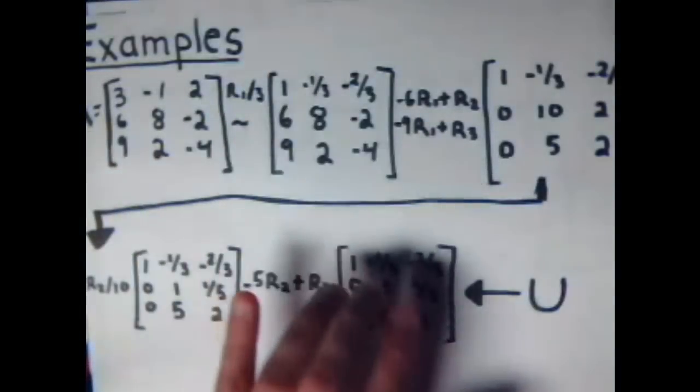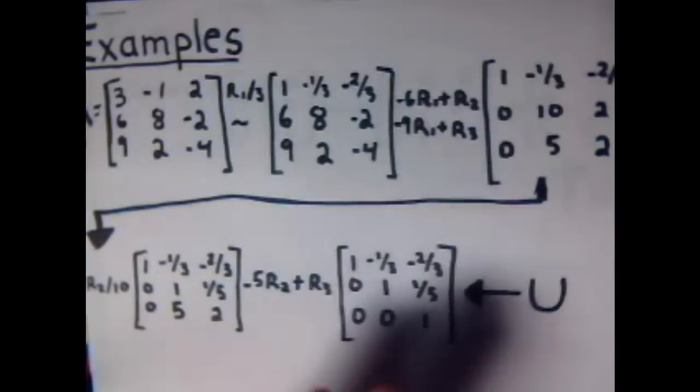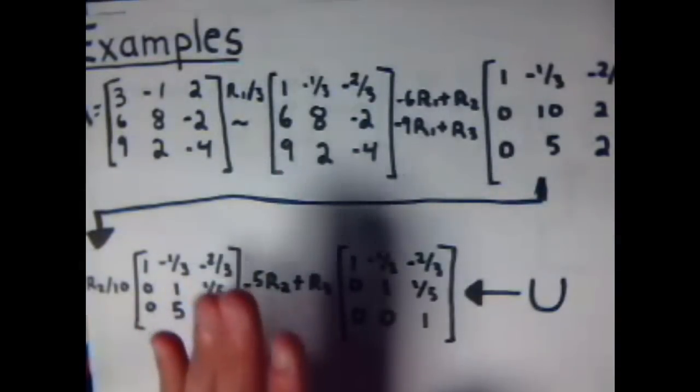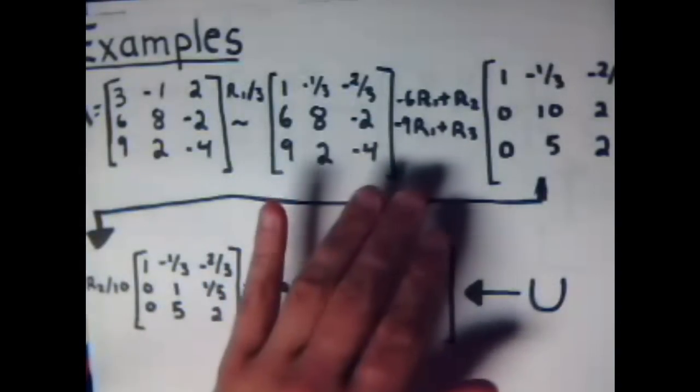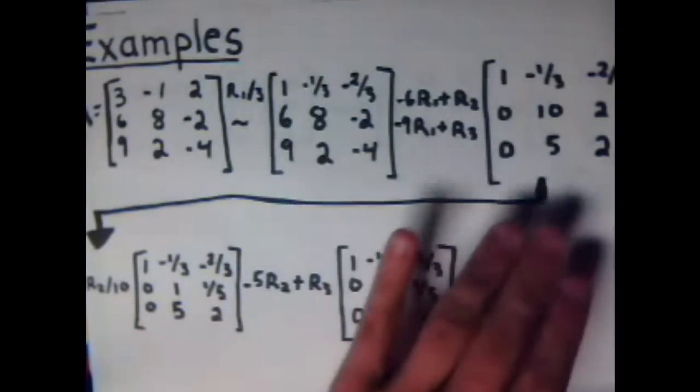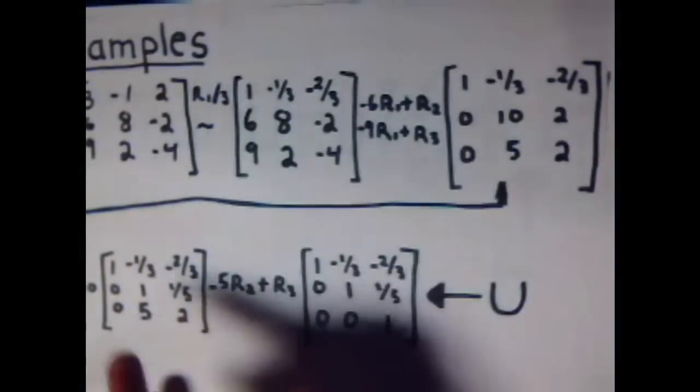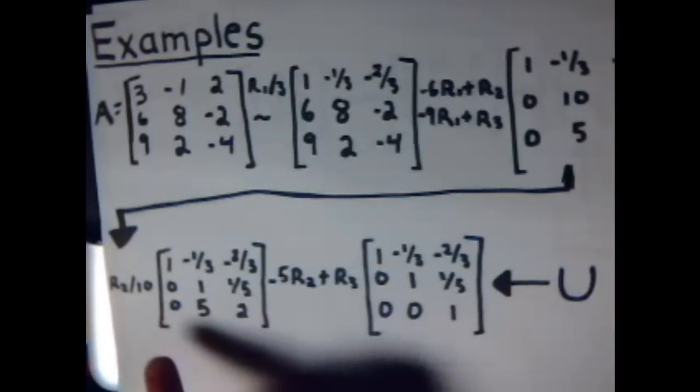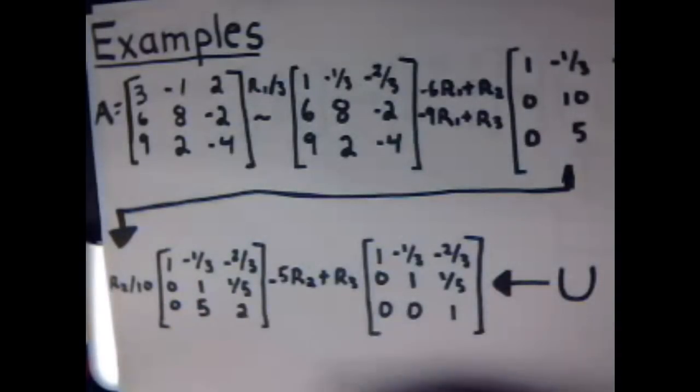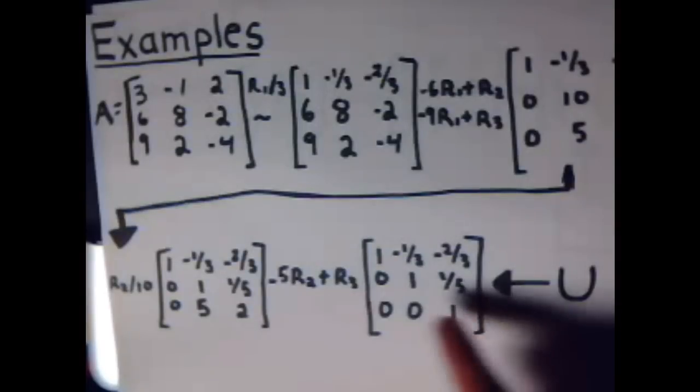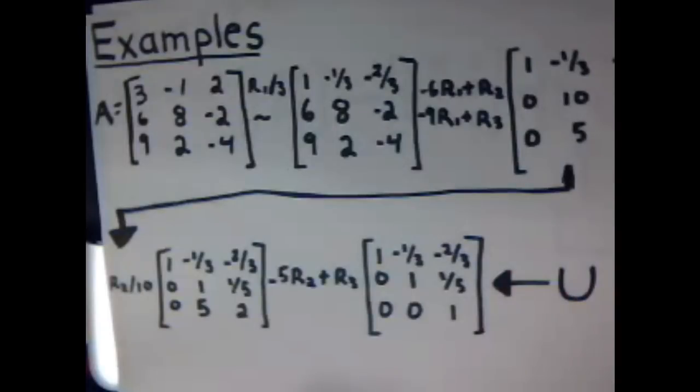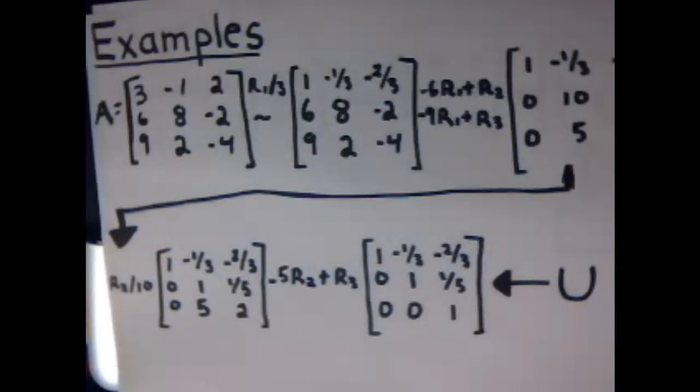And first I did row 1 divided by row 3. Got this part. And then I decided to do negative 6 times row 1 plus row 2 into row 2. And negative 9 times row 1 plus row 2 to get this. Went down here, ran out of room. And here you have row 2 divided by 10 to just simplify to get that and make it a little bit easier. And then negative 5 times row 2 plus row 3 to get our upper triangular matrix, which is U.